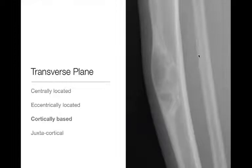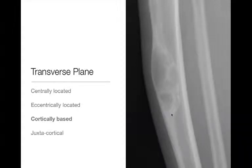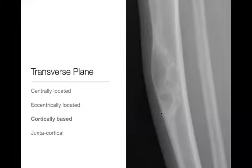Cortically based lesions are lesions that arise from the cortex of the bone. These can sometimes be difficult to distinguish from eccentrically located lesions — they may overlap in appearance. But this is a good example of a cortically based lesion arising from the cortex of the tibial diaphysis: a geographic lytic lesion, cortically based, with a narrow zone of transition and sclerotic border. This turned out to be osteofibrous dysplasia, which characteristically occurs within the cortex of the bone.